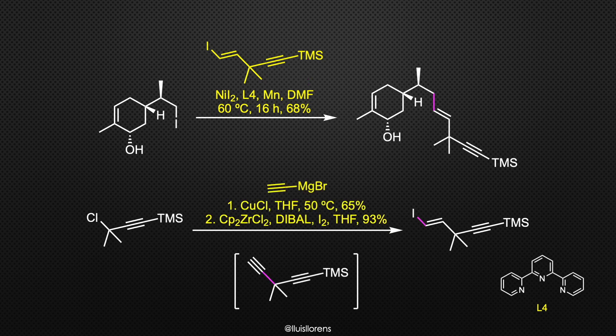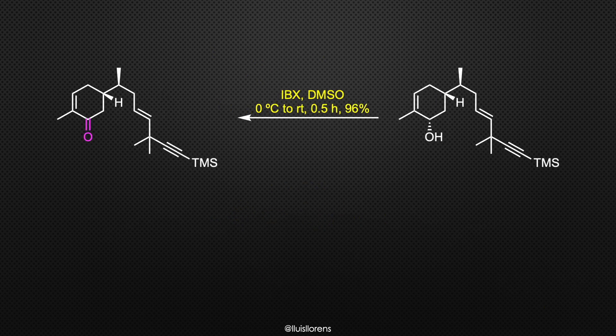The alkyl iodide was prepared from this commercial building block after exposure to ethynylmagnesium bromide in the presence of copper chloride, followed by regioselective hydrozirconation and iodination. The alcohol was then oxidized with IBX to the corresponding ketone.